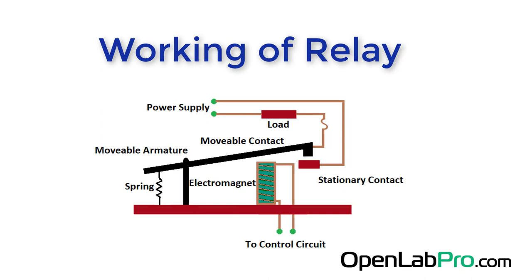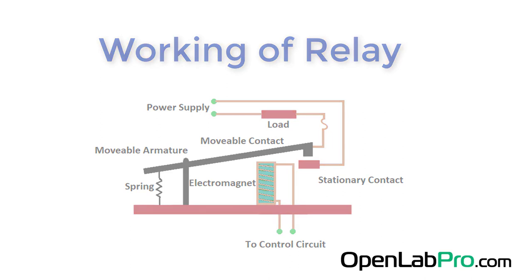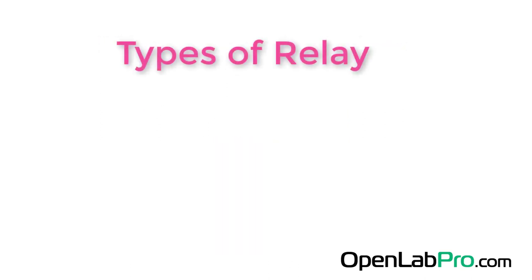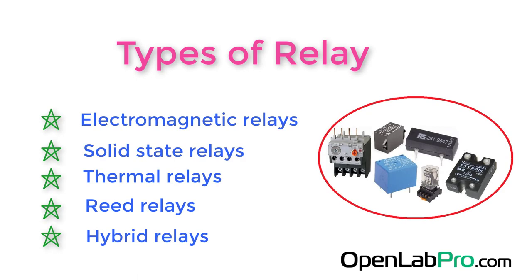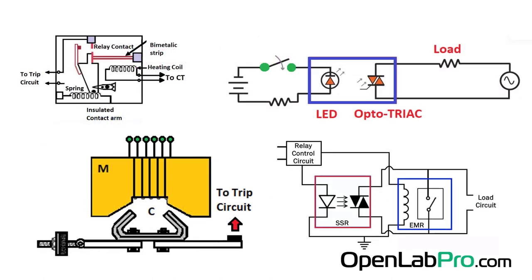Depending on the operating principle and structural features, relays are of different types, such as electromagnetic relays, solid-state relays, thermal relays, reed relays, and hybrid relays, with varied ratings, sizes, and applications.